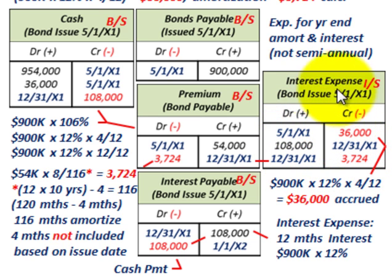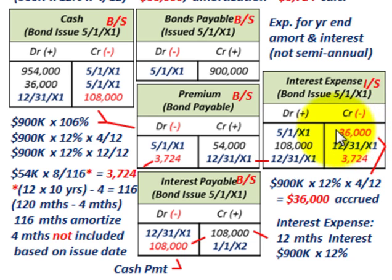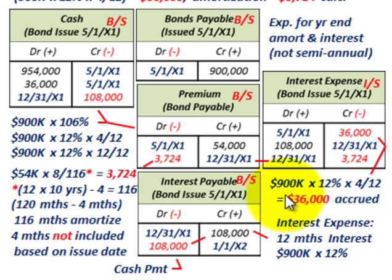The interest expense for the $36,000 accrued interest also reduces our interest expense on the income statement. We received that amount upfront when the bond was issued — it's received in advance but will be owed later. This shows that both the accrued interest and premium amortization reduce interest expense. The $36,000 was $900,000 times 12% times four months.